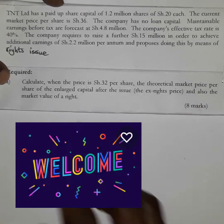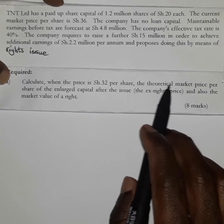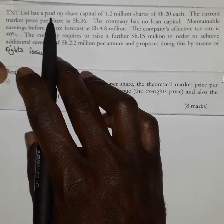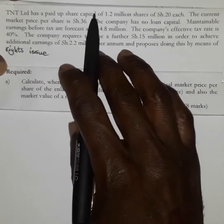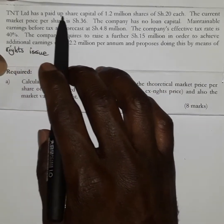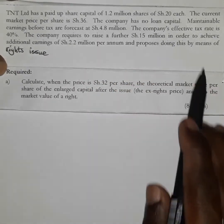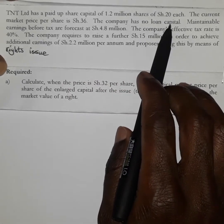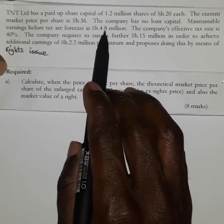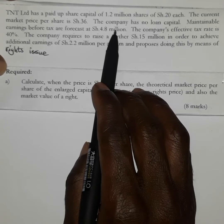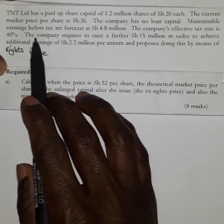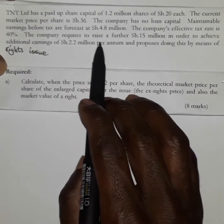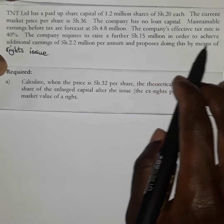Welcome to another exciting lesson. Here we have a question that requires us to determine the theoretical market price per share and also the market value of a right. TNT Limited has a paid up share capital of 1.2 million shares at 20 each. The current market price per share is 36 shillings. The company has no loan capital. Maintainable earnings before tax are focused at 4.8 million. The company's effective tax rate is 40%. The company requires to raise a further 15 million in order to achieve additional earnings of 2.2 million per annum, and proposes doing this by means of rights issue.